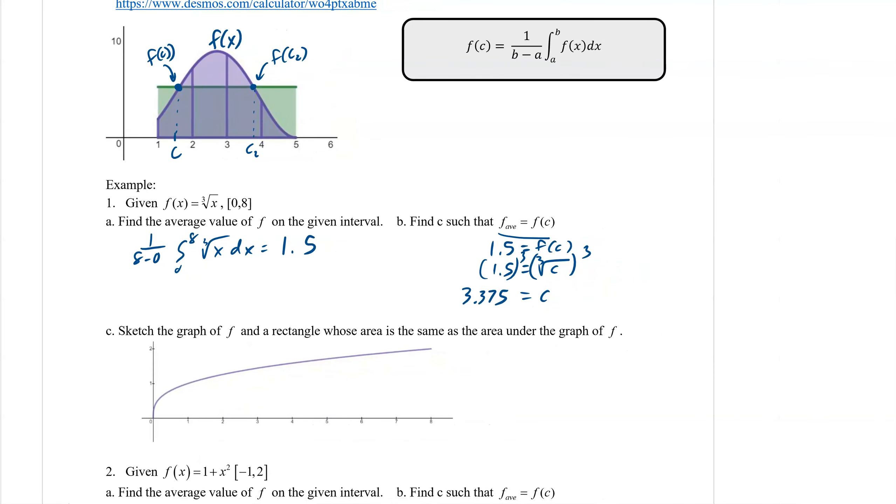That means that if we plug that in to our function, that's where our mean is going to be. Right here is our 3.375, and plugging that in then would be 1.5. You see if we follow it across right there. F of our c, f(c) is right there. That would be 3.375 comma 1.5. We already know that because we resolved it. A c of 3.375 would give you an f(c) of 1.5, which is the average.